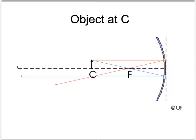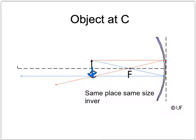If we put the object right on top of the center of curvature and draw our rays — the ray going in parallel comes out through F, the ray going in through F comes out parallel — where they meet is actually right underneath the object. What you get is an image at exactly the same distance, the same size, and it's inverted. It's real because that's where the light actually meets. Put a screen there and you're going to see it — it's a real image.